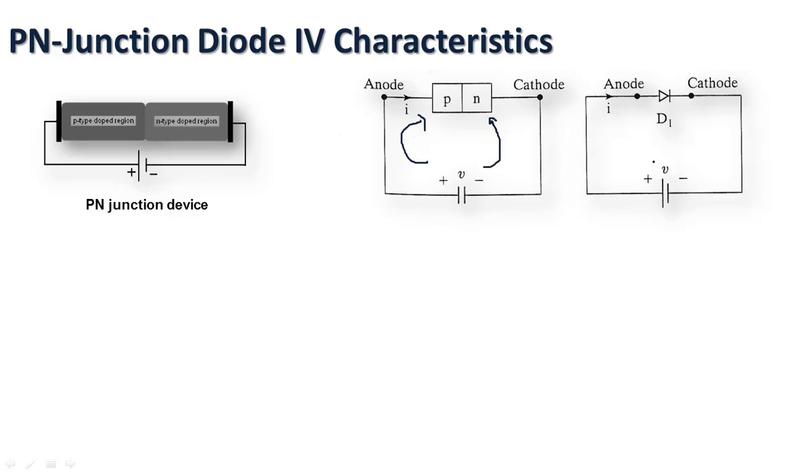If the positive terminal is connected to the anode, it becomes forward biased. If the positive terminal of the voltage supply is connected to the cathode terminal of the diode, it becomes reverse biased.